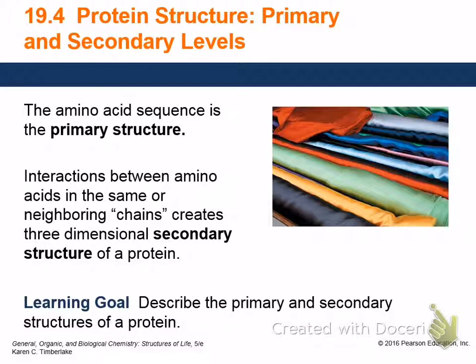Now we get to do the concept of protein structure levels. The amino acid sequence is what we call the primary structure - it's just the order. So glycine, methionine, serine, or whatever the specific order of the amino acids is, that's known as the primary structure. Above that, we have secondary structures, and then there's tertiary and quaternary.